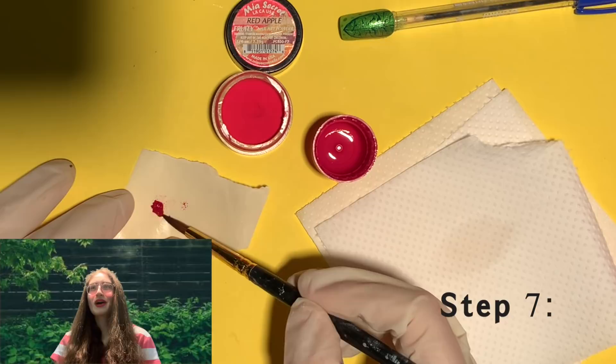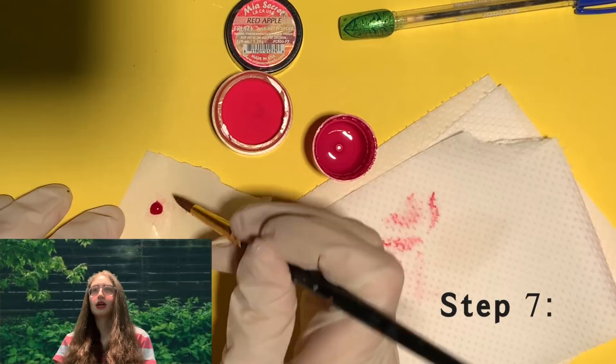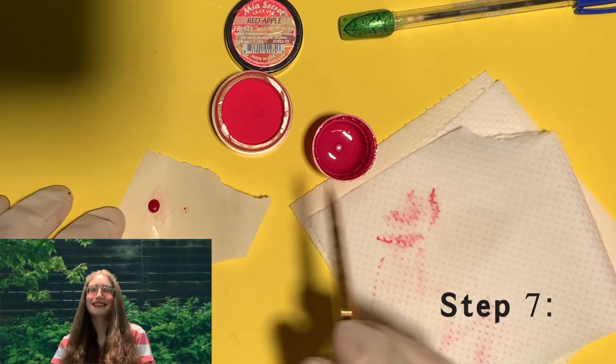Step seven, get some wax paper or a plastic bag and put two medium sized acrylic beads on top of each other with red acrylic and form a little 3D circle as the body of our little ladybug.